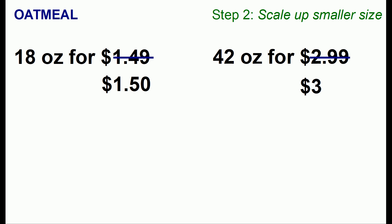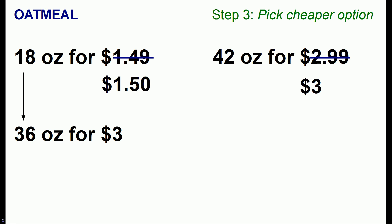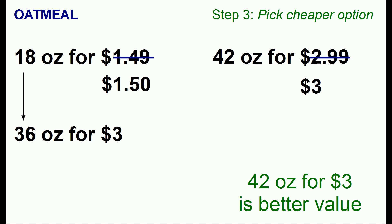Then we'll scale up the smaller size. If we buy two packages of the 18-ounce oatmeal we'll end up with 36 ounces of oatmeal for $3. Now in this case we don't have the exact same quantity for both packages — one is 36 ounces and the other is 42. However, we do have the same dollar amount for two different amounts of oatmeal. So would you rather get 36 ounces for $3 or 42 ounces? The answer is easy — pick the one giving you more oatmeal for $3. So in this case 42 ounces is a better value.